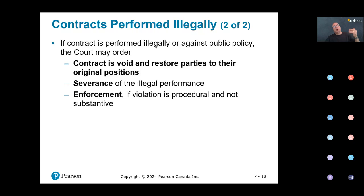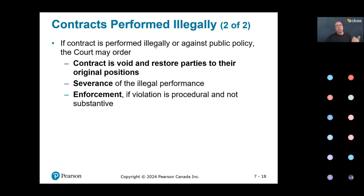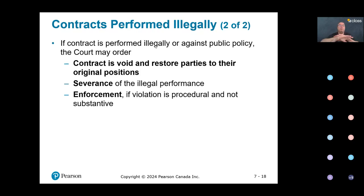Courts will help the victim in this situation. To summarize: a contract performed illegally — where the contract itself is legal — may be correctable (like obtaining a building permit) or non-correctable (like practicing law without a license or providing medical services without being a doctor). In non-correctable cases, courts cancel the contract and restore parties to their original position.